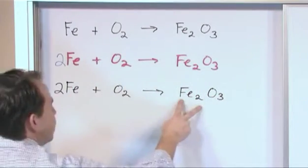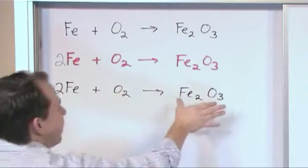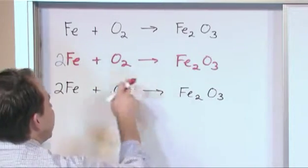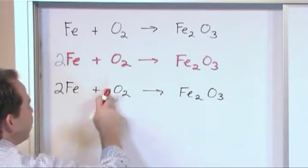Alright, now we have two irons, two irons. We have two oxygens, we have three oxygens. Alright, now here we're presented with a little bit of a conundrum. And a lot of times what you'll be taught to do in books or maybe even by your teacher is to continue playing around with these coefficients until you can balance the oxygen.